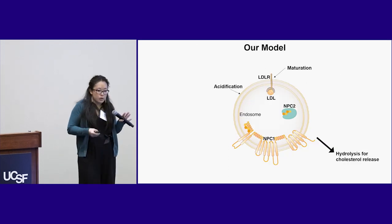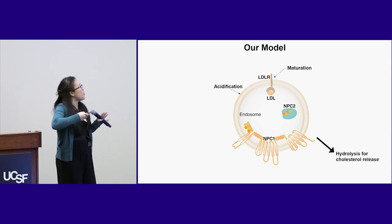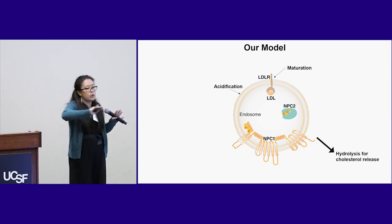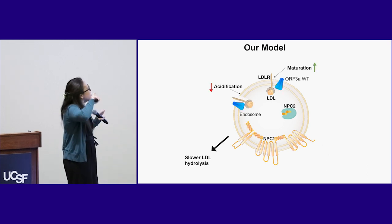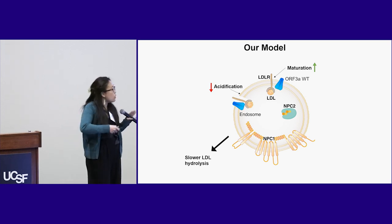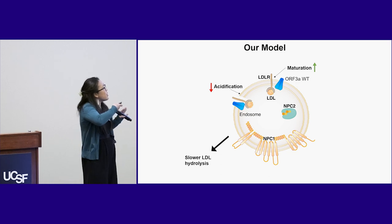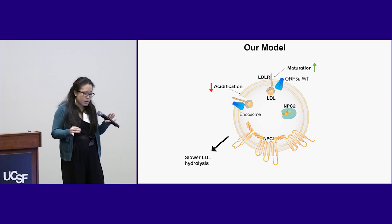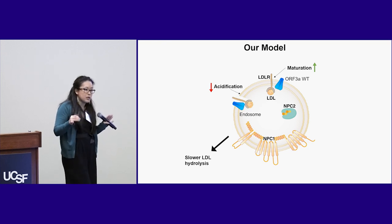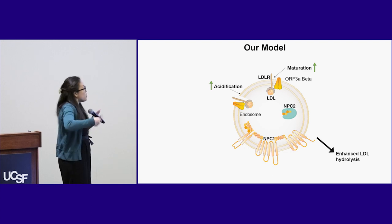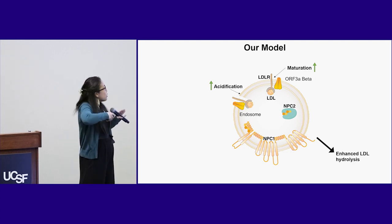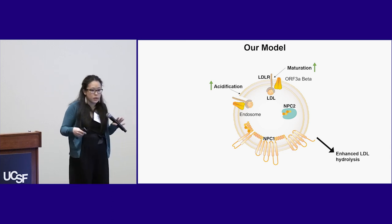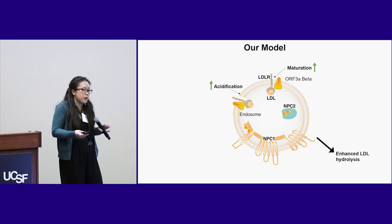Our working model: LDLR binds LDL, acidifies, and releases free cholesterol for cellular uses — that's a healthy cell. In the presence of SARS-CoV-2, specifically wild type ORF3A, ORF3A interacts with LDLR and somehow deacidifies the endosome, sequestering cholesterol and potentially slowing the kinetics of LDL hydrolysis. With the beta variant, ORF3A seems to restore this hydrolysis process, with increased acidification allowing increased release of LDL from its receptor and hydrolysis of cholesterol — potentiating why the virus does better in a high cholesterol setting.